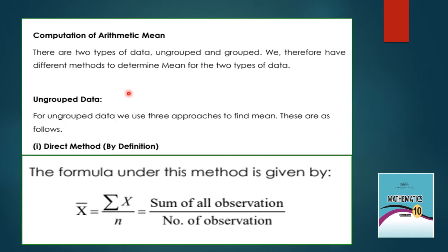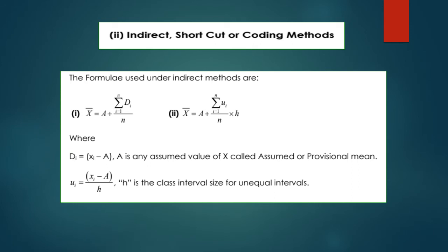Computation of arithmetic mean: there are two types of data — grouped and ungrouped. For ungrouped data, methods are: (1) direct method — x-bar equals summation x divided by n. (2) Indirect shortcut or coding method — x-bar equals A plus summation d divided by n, or x-bar equals A plus (summation u divided by n) multiplied by h, where d equals x minus A, u equals (x minus A) divided by h, and h is the class interval size.